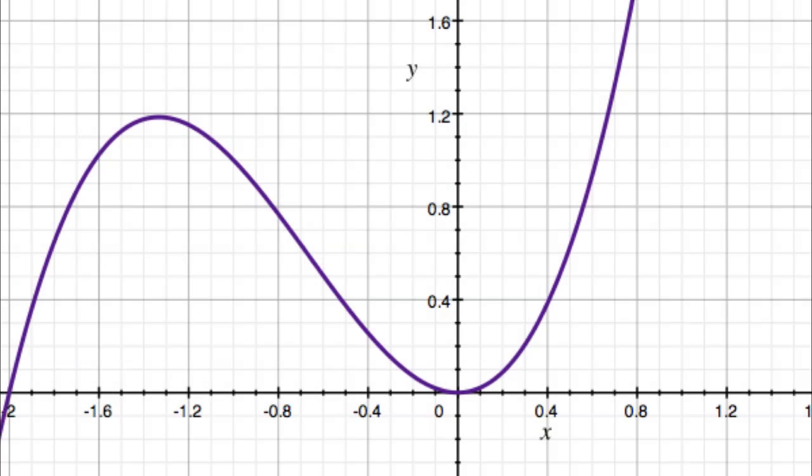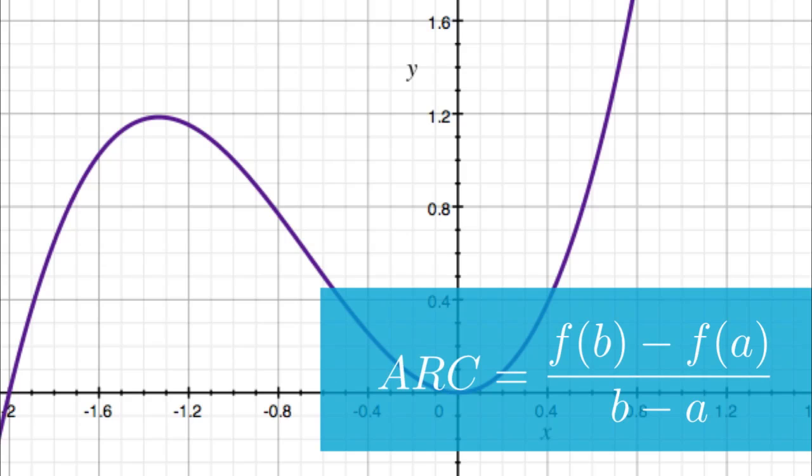To model this mathematically, we'll have to borrow an equation we learned way back in algebra for the average rate of change of a function between two points. a f of a is our tangent point and b f of b is our second point. Using these two points, we can calculate the average rate of change of the function between them.